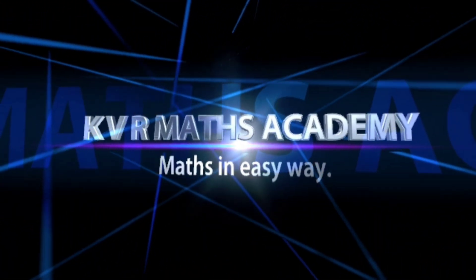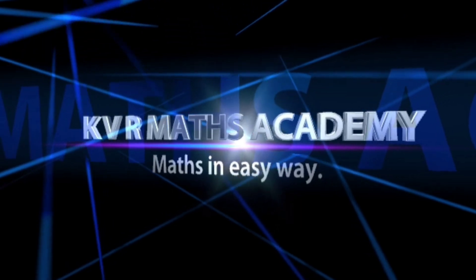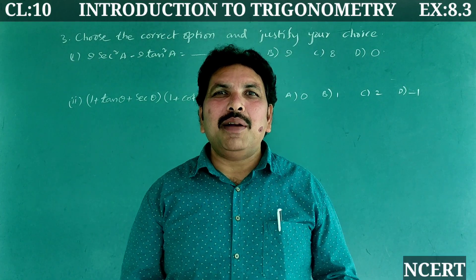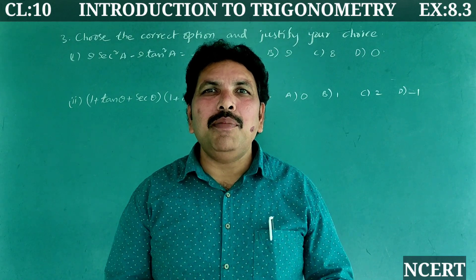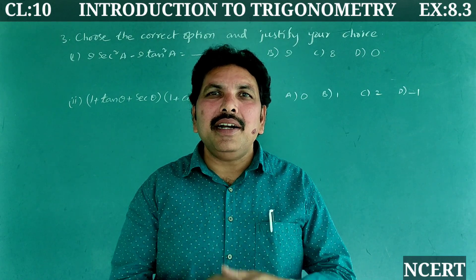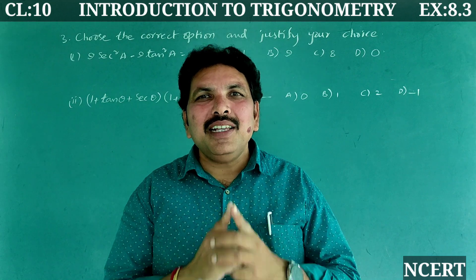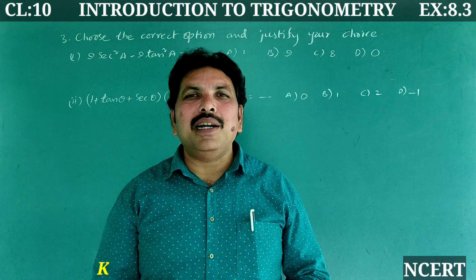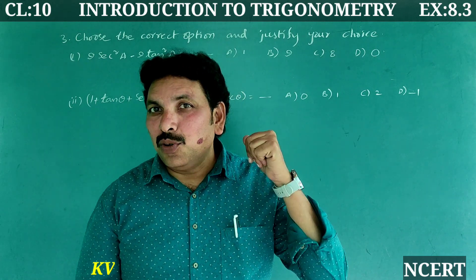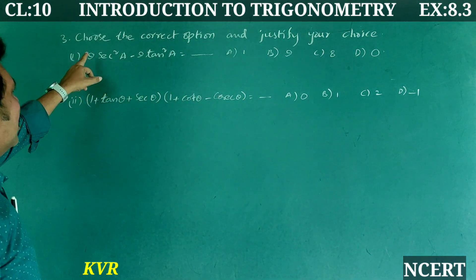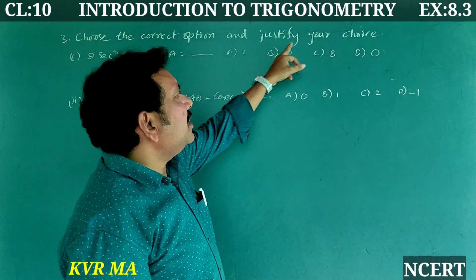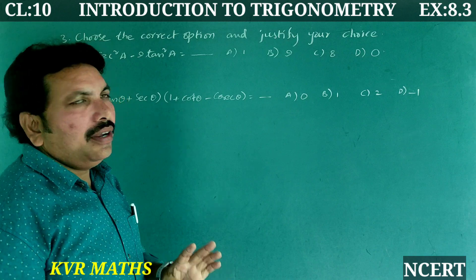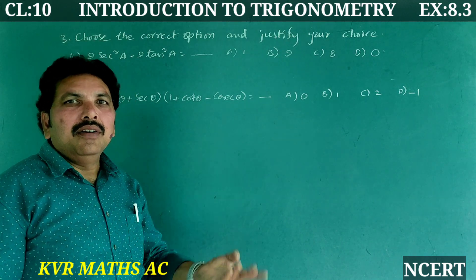Welcome to KVR Maths Academy. In this video, let's discuss the third problem in Exercise 8.3 in Introduction to Trigonometry of 10th class mathematics. Before doing these problems, please subscribe to my YouTube channel if you haven't yet. The third question says: choose the correct option and justify your choice — there are 4 sub-questions we'll check one by one.